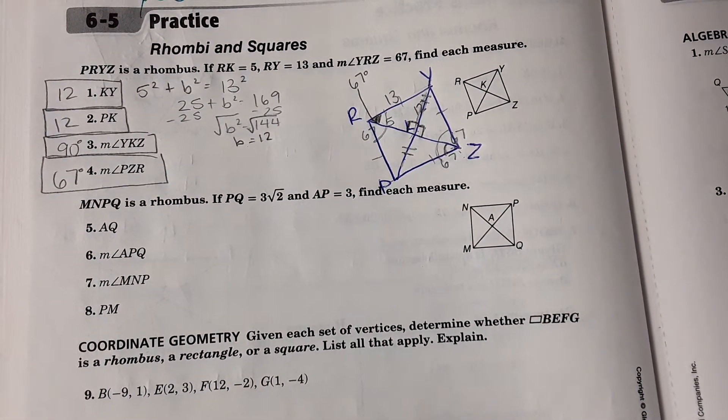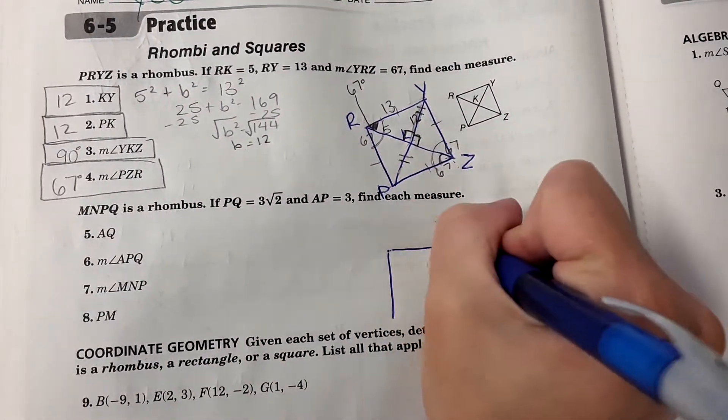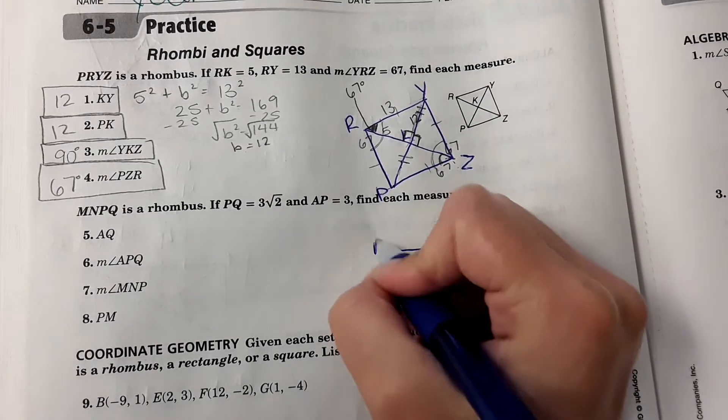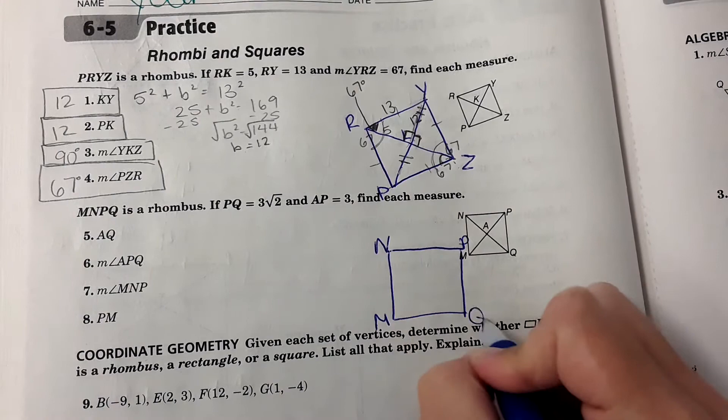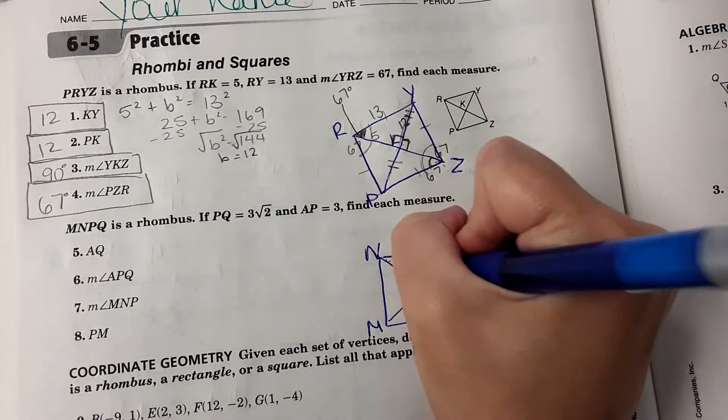And then the next one. I'm going to draw it larger again. M, N, P, Q, diagonals here. This is A, this is A.